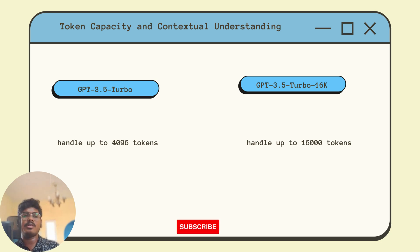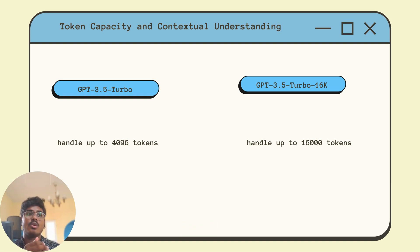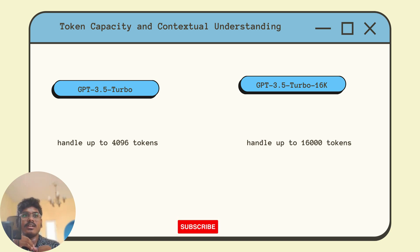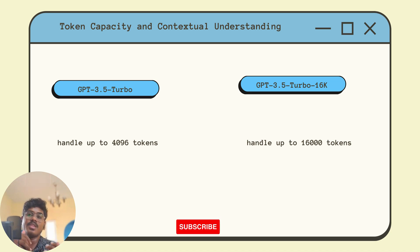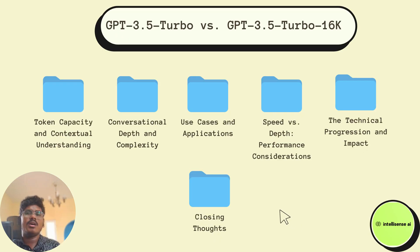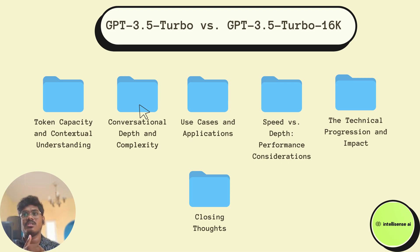With that expanded token limit, GPT-3.5 Turbo 16k can maintain a richer contextual understanding throughout longer prompts and responses. This makes it excel in scenarios where depth and thoroughness matter. That's why the 16k variant extends beyond the standard turbo token capacity.